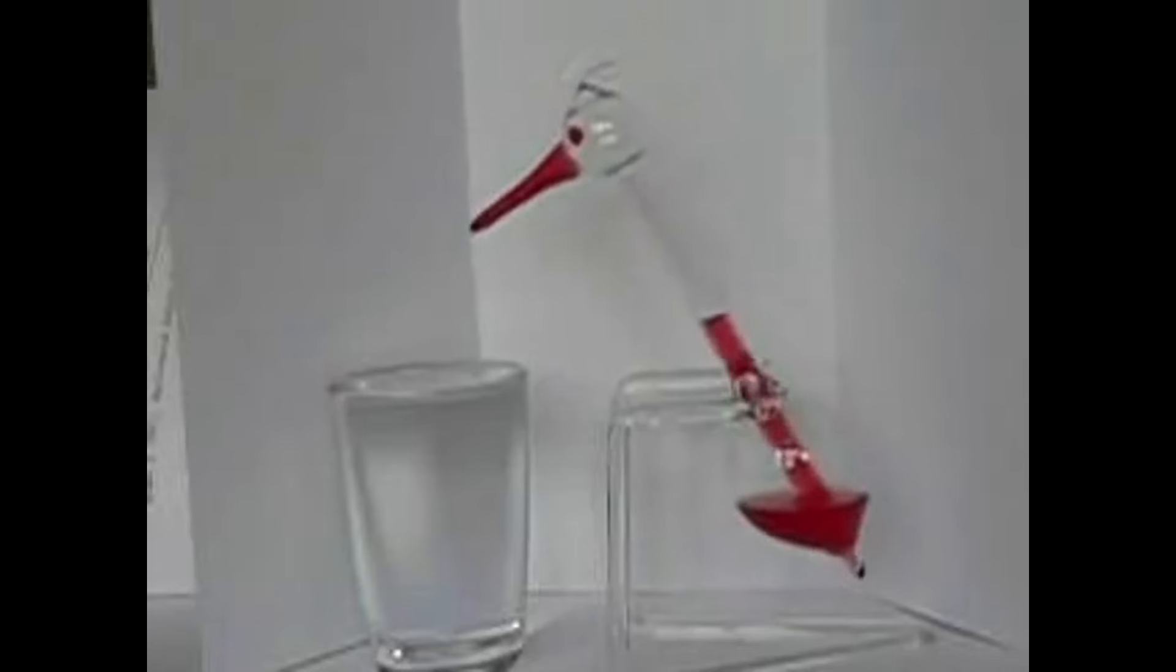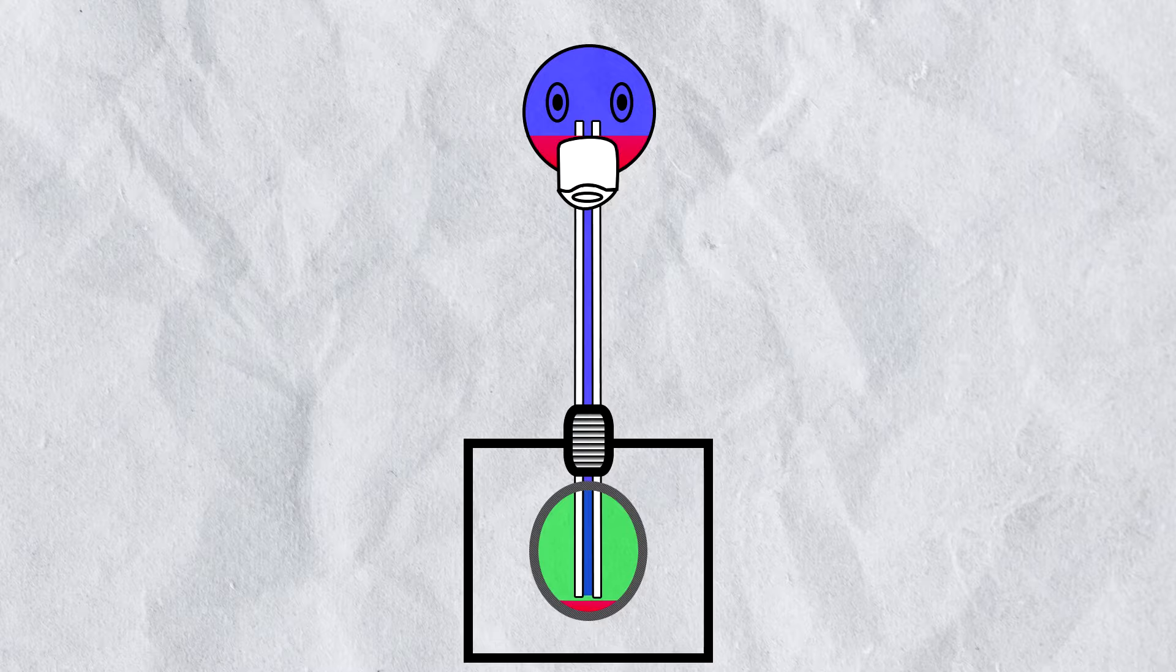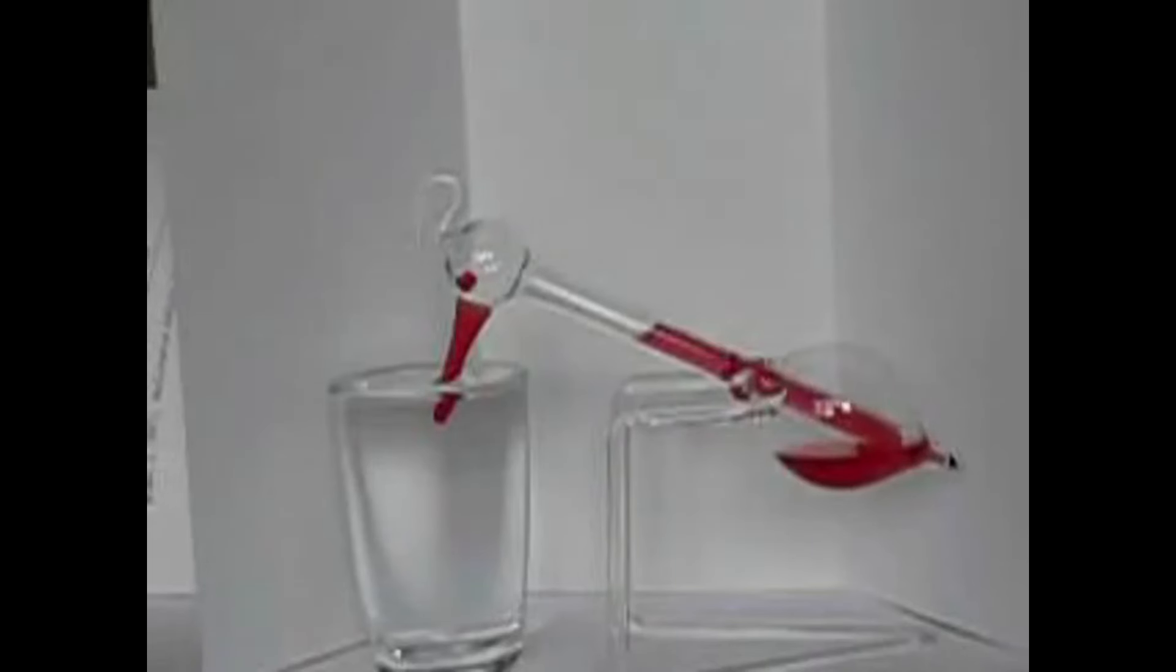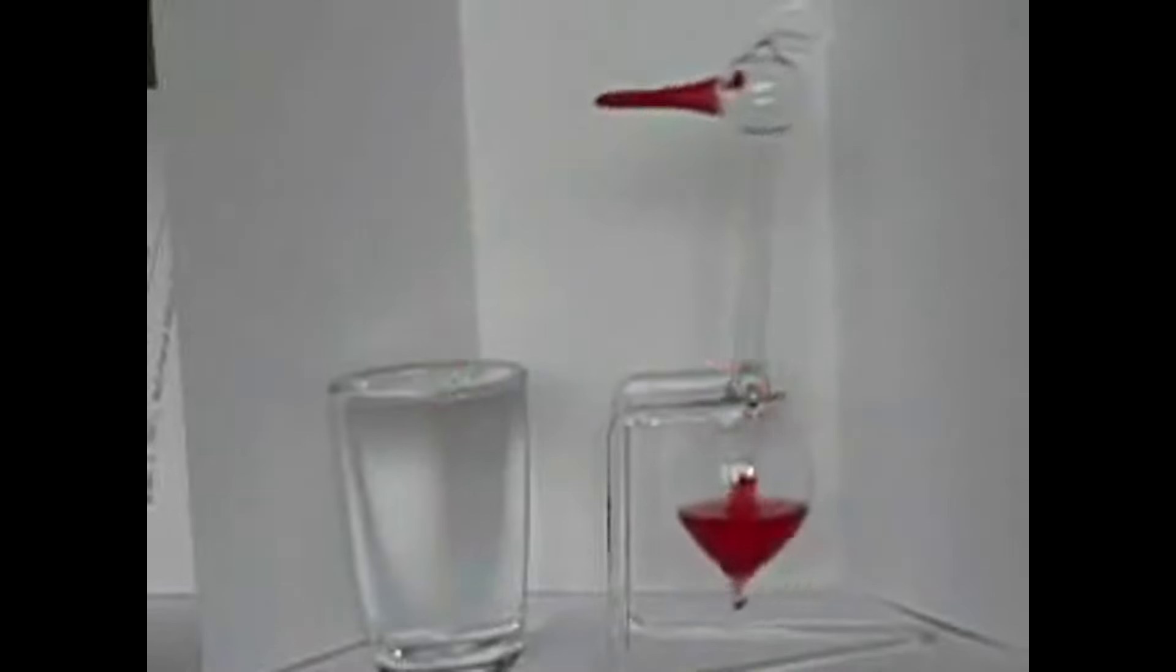As the head becomes heavier, the bird dips and when it does, the vapor in the head and in the base are connected. The pressure equalizes and the bird goes back to its original position.